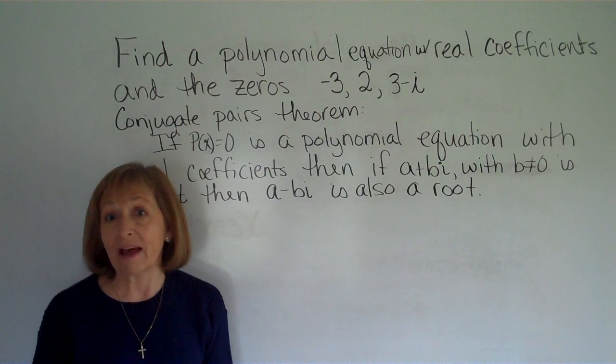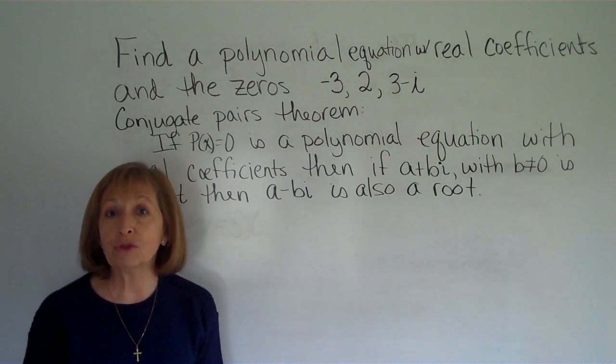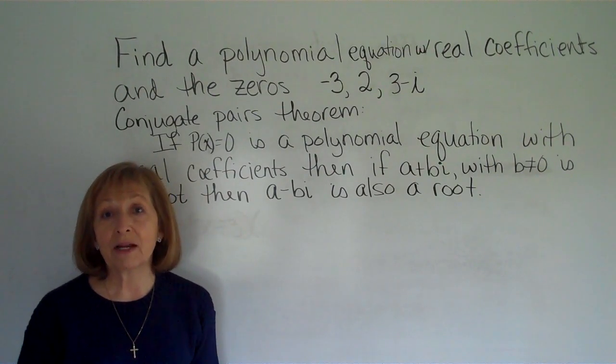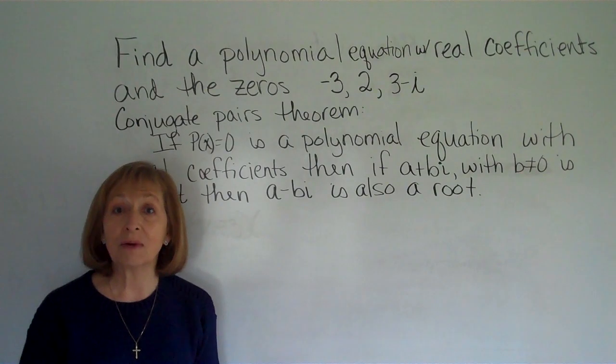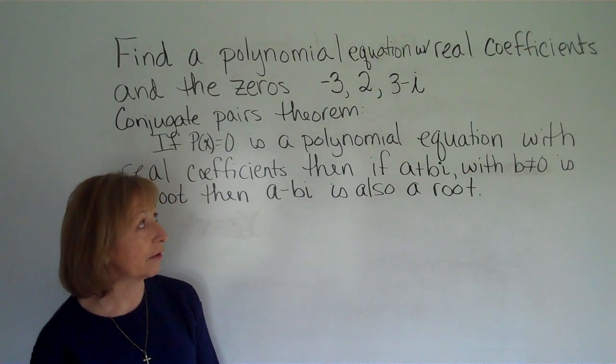So the conjugate pair of say 5 minus i is 5 plus i. The conjugate pair of 2 minus 4i is 2 plus 4i. The conjugate pair of 7 plus 2i is 7 minus 2i. So that's what we're talking about in terms of our conjugate pairs.